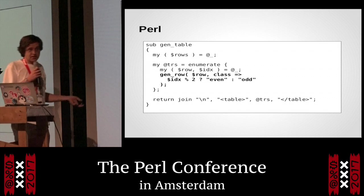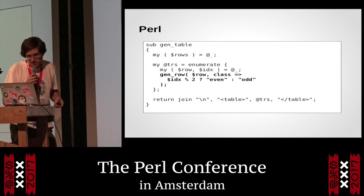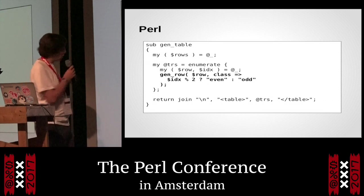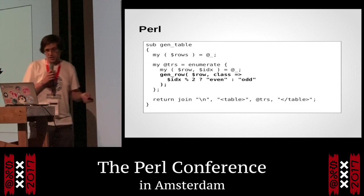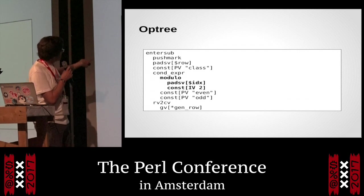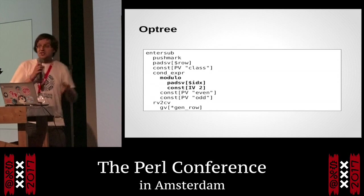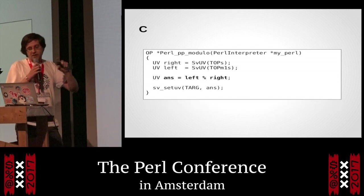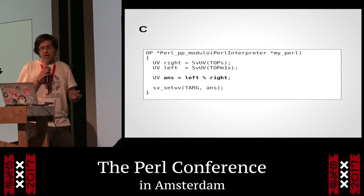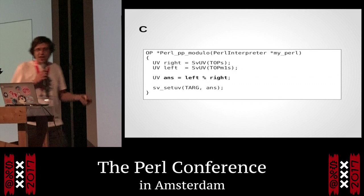In our HTTP server, we may have a gen_table function that generates the table. We iterate over the rows and look at the index to see if it's odd or even, using the % 2 mod operator. How that works internally in the interpreter: this is an 'op_modulo' which takes two arguments — a pad_sv that looks in the pad to find the variable it's working on, and a constant IV of 2. In C the actual function is about 50 lines long, but it boils down to looking on the stack for the top two values, storing them in left and right, calling the % operator on them, getting the answer, and setting the target to that answer.